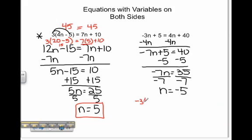Negative 3 times negative 5 plus 5 needs to be equal to 4 times negative 5 plus 40. Negative 3 times negative 5 is 15 and 15 plus 5 equals 20.